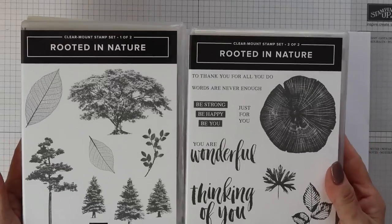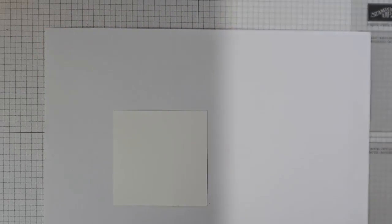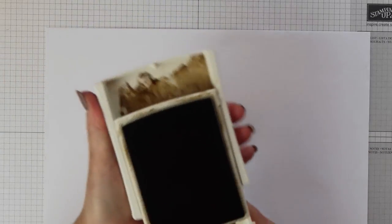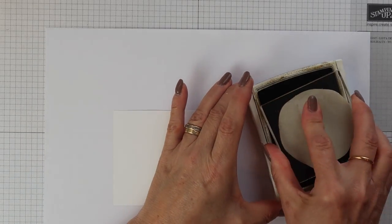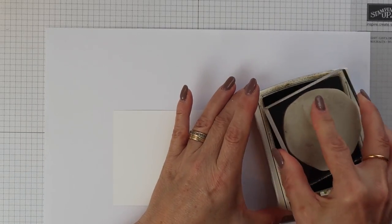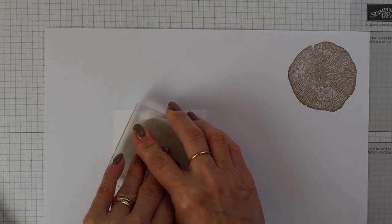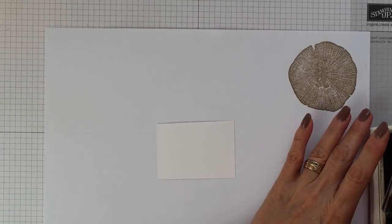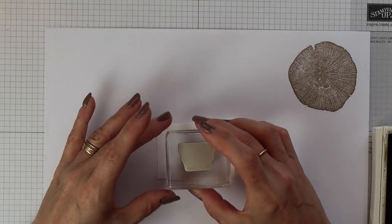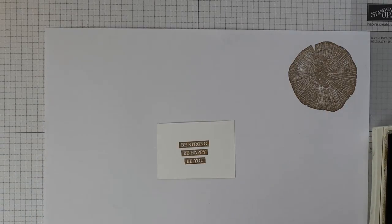For the stamping I'm using the rooted in nature stamp set. I'm using soft suede ink and I'm going to ink up the tree slice stamp, stamp it off, and then stamp it down onto a piece of scrap whisper white cardstock. This will then be cut out by hand. I'm also going to use the soft suede ink to stamp the sentiment and then I'm going to cut this out by hand as well, separating each of the little blocks.